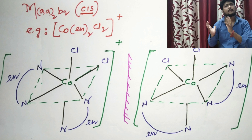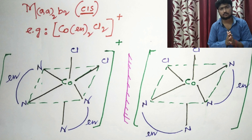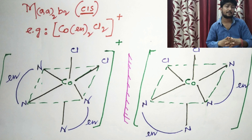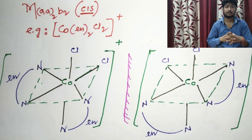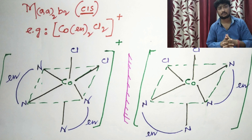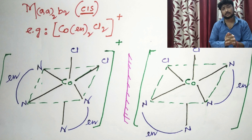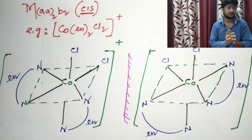This was all about geometrical isomerism — cis and trans. Now it is time to explain optical isomerism. For each cis isomer, there is also an optical isomer.